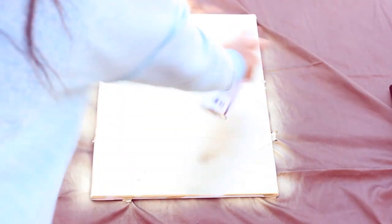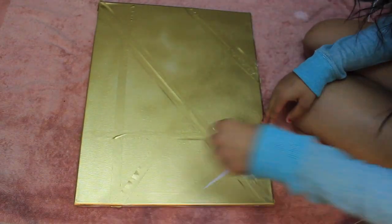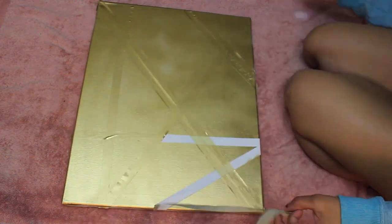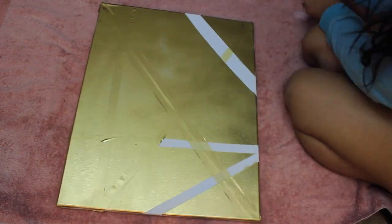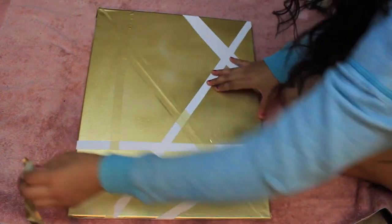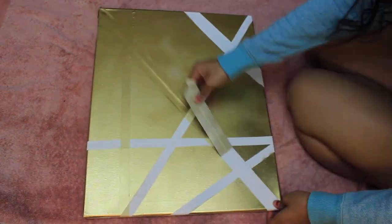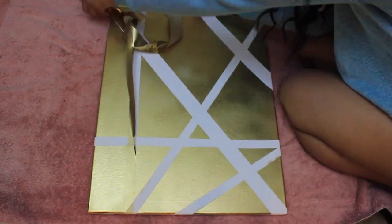I'm going to spray paint the whole entire canvas gold. I'm just going to peel off the tape which should leave nice crisp lines on my canvas and that's it. This is a really easy DIY and it's not expensive at all and it just adds a great touch to your room.